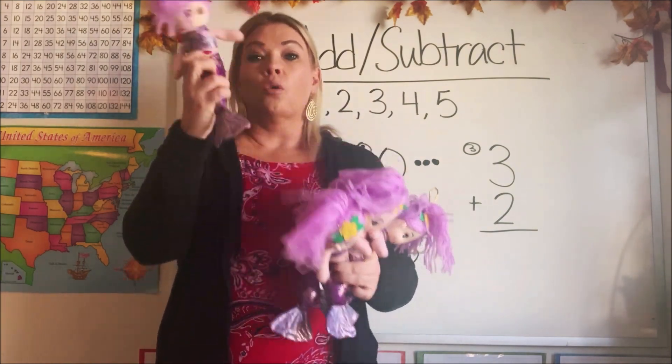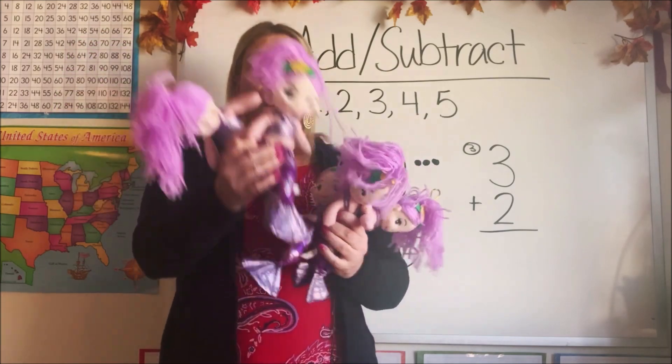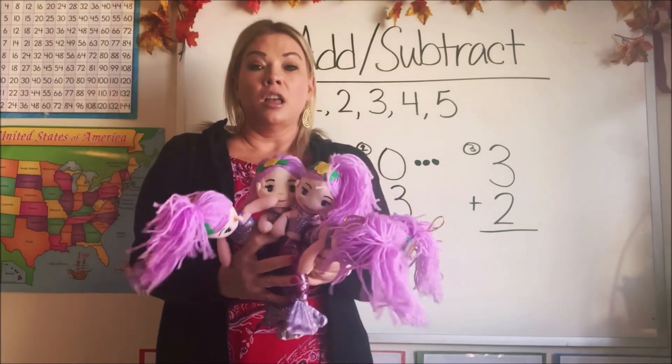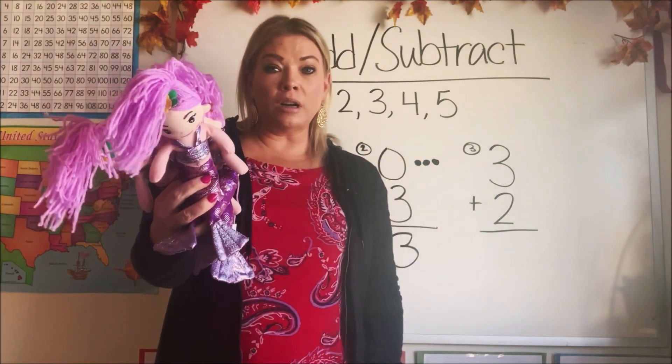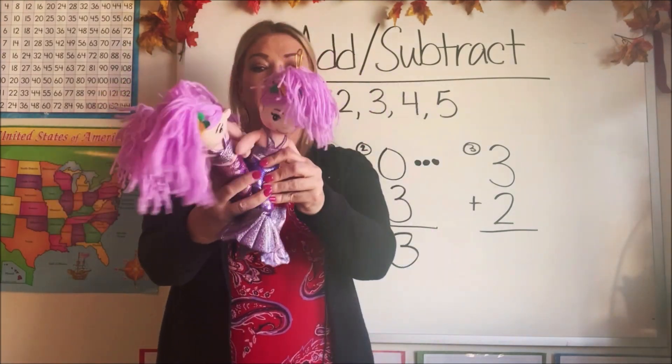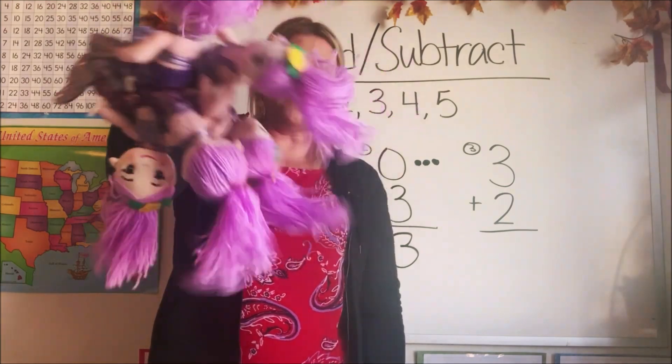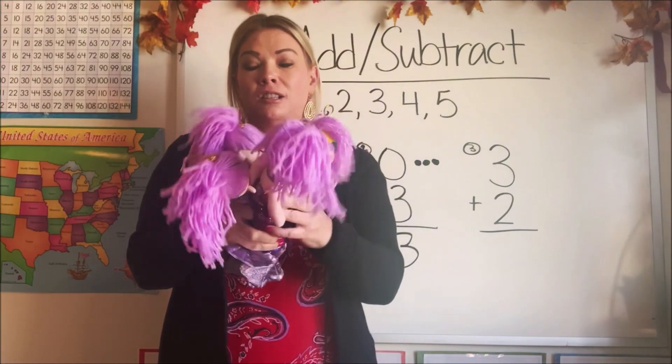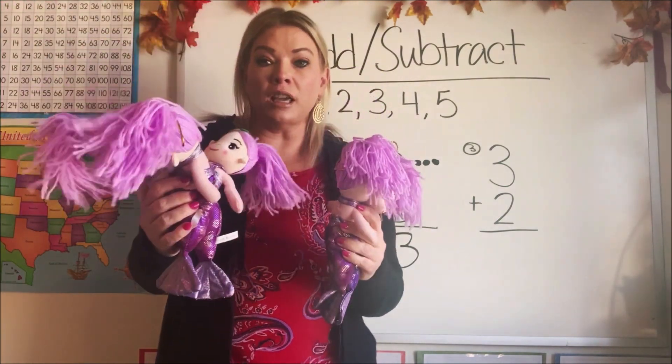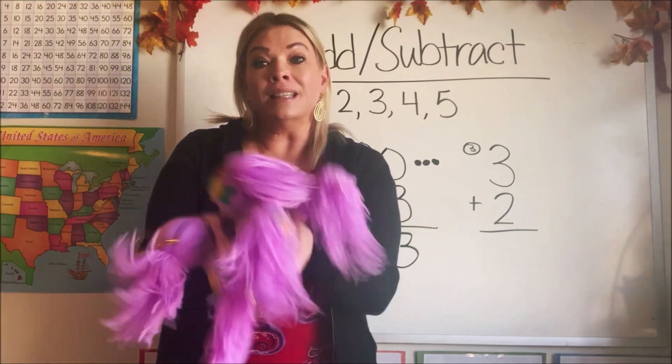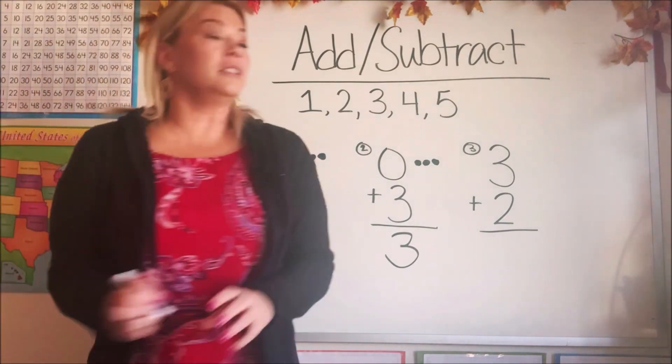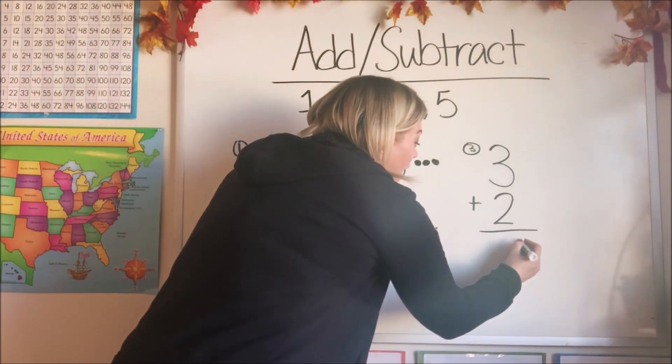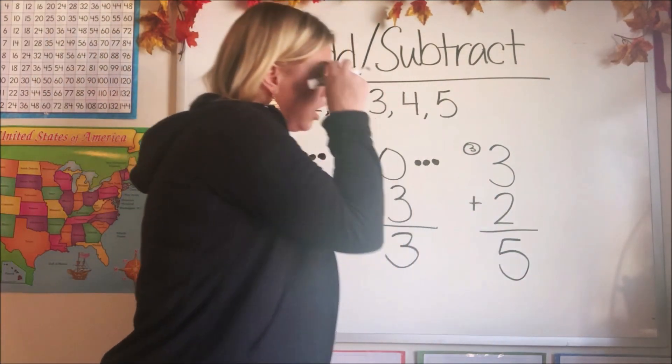Let's see how many we have now. Should we count them? One, two, three, four. Oh my gosh, I can't fit all of them in my hand. Five. We have five mermaid dolls. Because three and two more means five dolls total. Let's write down our answer. It's five. Good job.